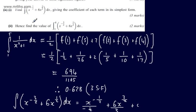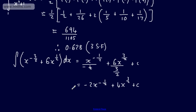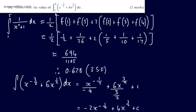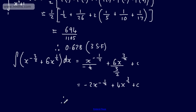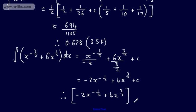In part B2, using the result from B1, we evaluate the integral from 1 to 4 of x to the minus 3/2 plus 6x to the 1/2 with respect to x. This carries 2 marks. We apply the antiderivative minus 2x to the minus 1/2 plus 4x to the 3/2, evaluating between the limits 1 and 4.